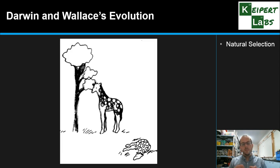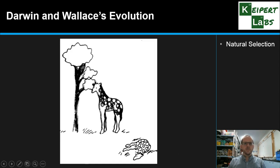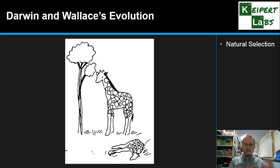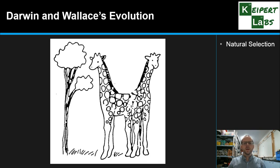Those giraffes with longer necks are more able to reach the foliage on the high trees, they can get more food, and are therefore more likely to survive. Those that have short necks and short legs and can't reach that food are more likely to die out. Over time, those short-necked ones continue to die off — representing the less fit to survive. Gradually, what we see is that the ones with the tallest necks survive to reproduce, and those that don't survive don't reproduce and die out, so that only long-necked giraffes survive.